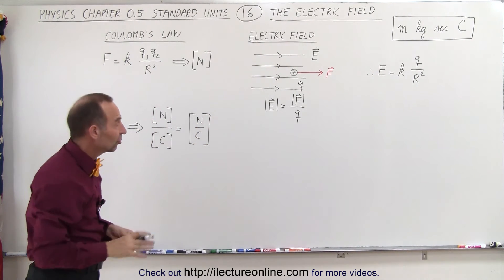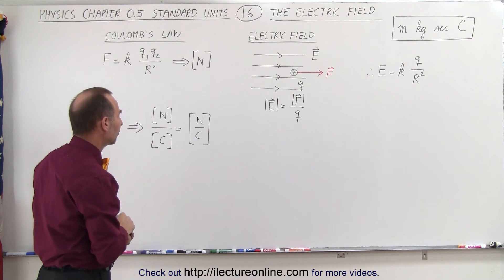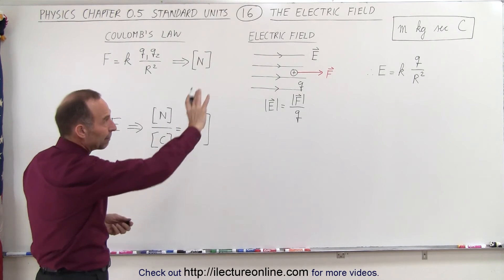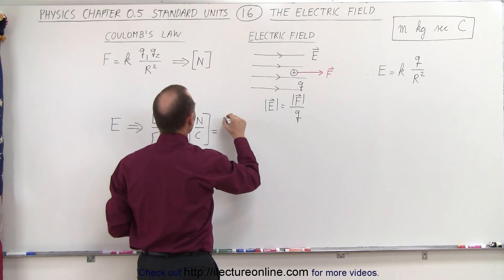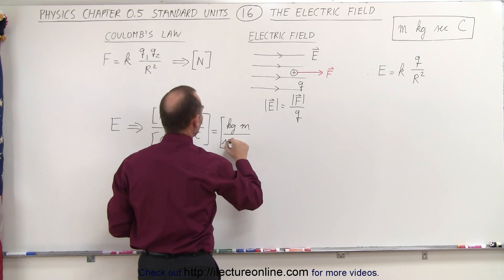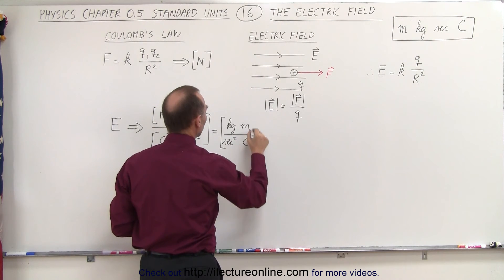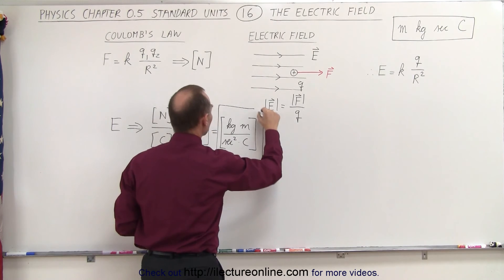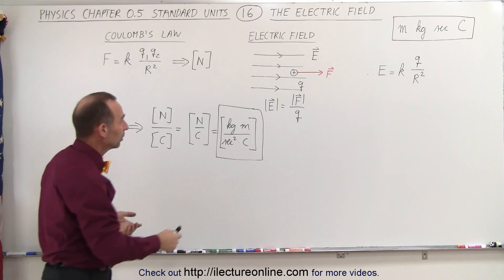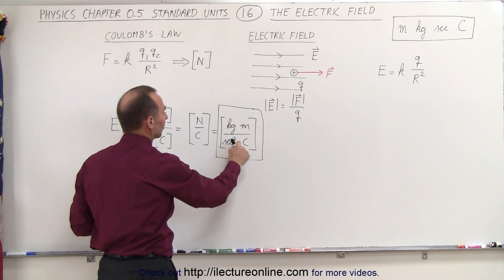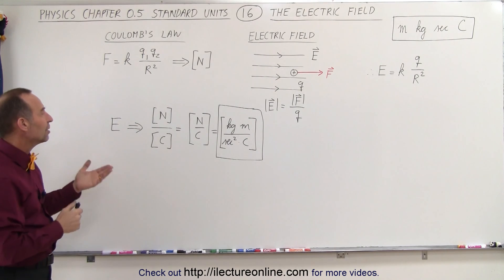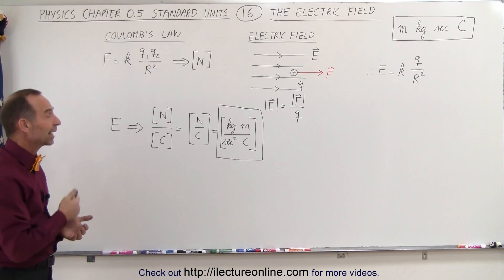Later on we'll find out there's a second way in which you can express the unit for the electric field. If you want to continue to break that down to see what it looks like in the basic units, you can say a newton can be defined as a kilogram meter per second squared, and multiply that times one over coulomb. So the standard units for the electric field involve all four: meters, kilograms, seconds, and coulombs — or kilograms times meters per second squared per coulomb — are the basic units for the electric field. And that's how we know.